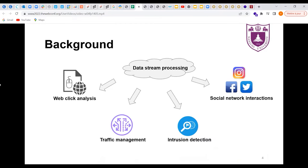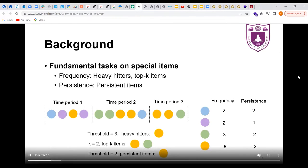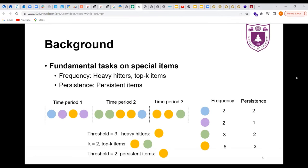Nowadays, data stream processing has been widely deployed in web analysis such as traffic management, intrusion detection, web click analysis, and social network interactions. One of the most fundamental tasks is to find special items with features such as frequency or persistence. The frequency of an item is the number of its occurrences, and the persistence of an item is the number of periods it occurs. Typical special items include heavy hitters, which refer to items with frequencies larger than a predefined threshold, top K items, which are the K items with the largest frequencies, and persistent items whose persistence is larger than a threshold.